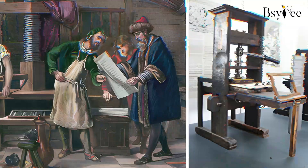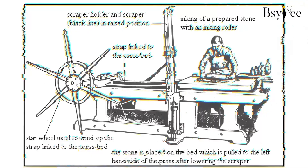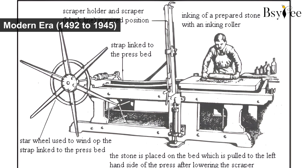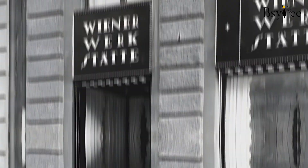This marked the birth of graphic design as we know it. The modern era, spanning from 1492 to 1945, brought more innovations. The Industrial Revolution introduced lithography — a technique that involved etching designs onto stone or metal surfaces and transferring them to paper. In 1903, the Wiener Werkstätte emerged as the world's first graphic design agency, collaborating with architects, artists, and designers to pioneer modern design.